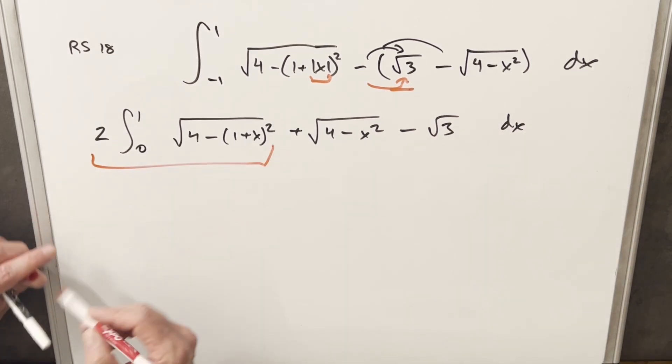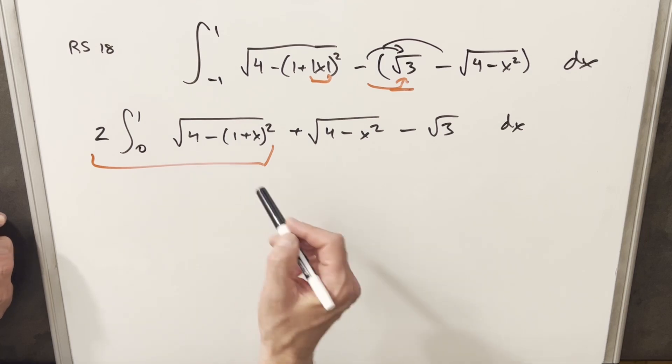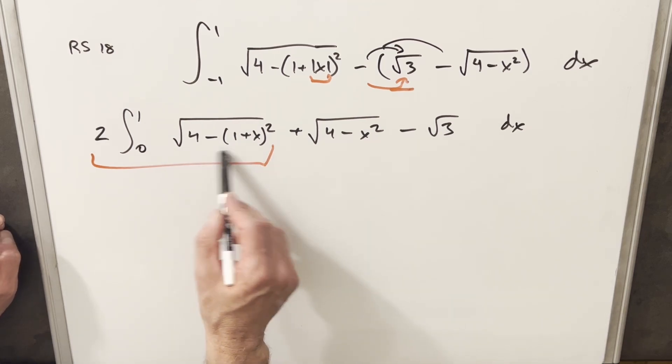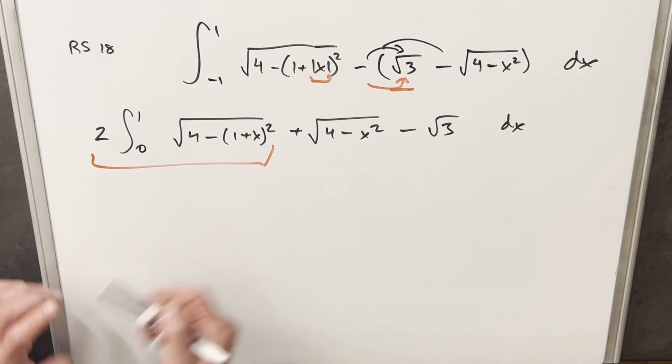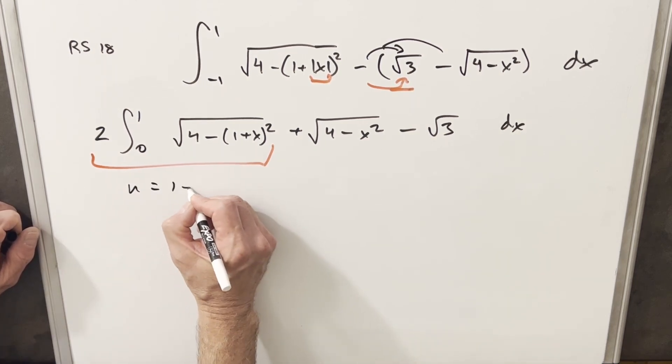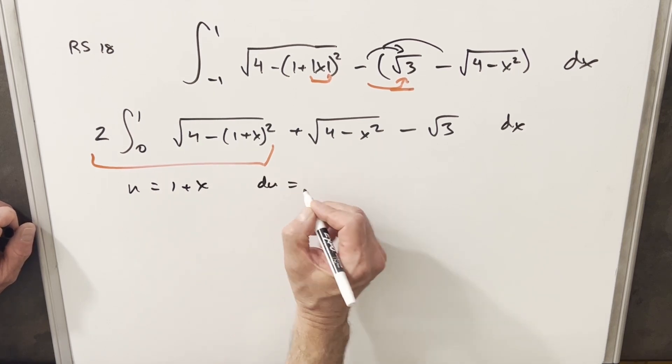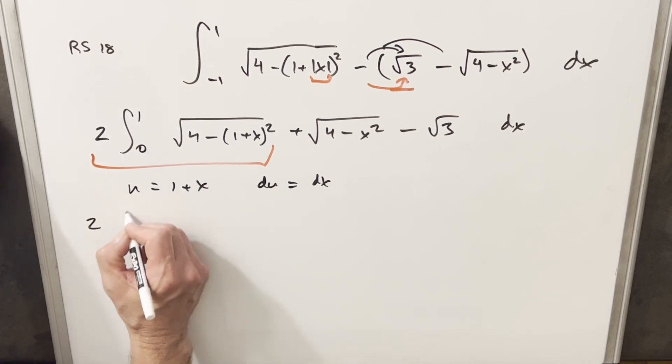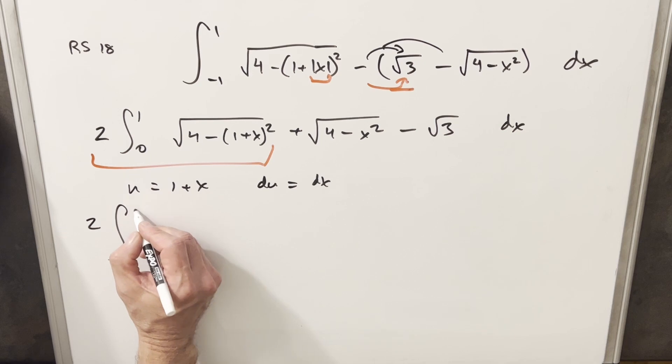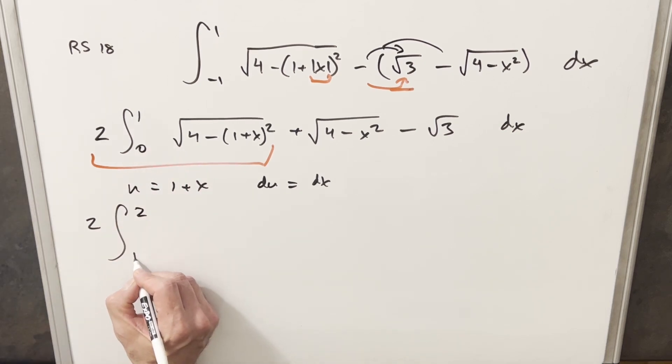From here, I'm thinking of breaking this into three integrals and dealing with these separately. But notice the similarity of this one to this one. Focusing on this first one, I'm going to do a U substitution to clean this up. I'll make U equal to one plus X, and then DU will just be DX. Now on our bounds, we'll plug a one in here so our upper bound will become two. We'll plug a zero in and the lower bound is going to be one.